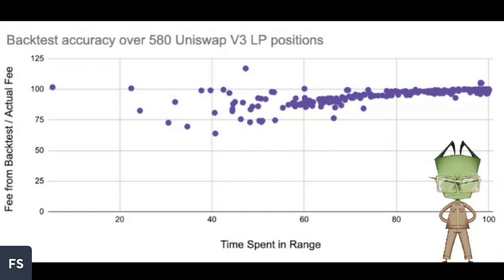Is that a good way of explaining it or am I off base? No, that's a good way to explain it. One other thing to consider: you could be in the same range as someone else, providing liquidity within that range, but if you have the same dollar amount and your range is tighter — for example, if player A has $100 in a 10% range and you have $100 in a 5% range — you're both providing liquidity within that 5% range, but you have all of your capital concentrated within that 5% range.